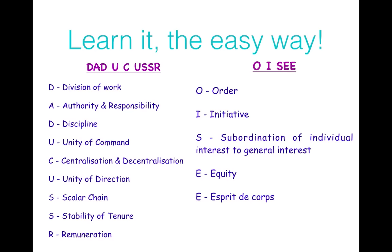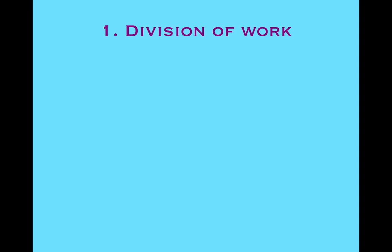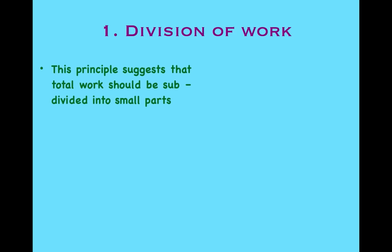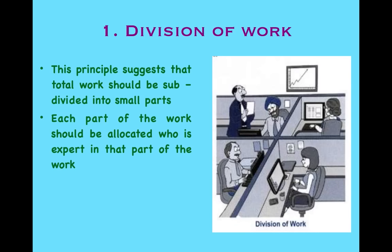Now let's see each principle in a little detail. The first principle is Division of Work. This principle suggests that total work should be subdivided into small parts. As you can see in the picture, a manager is asking his subordinates to do different work — he has allocated different tasks to different subordinates depending on their expertise. Each part of the work should be allocated to someone who is expert in that area, which will lead to specialization.